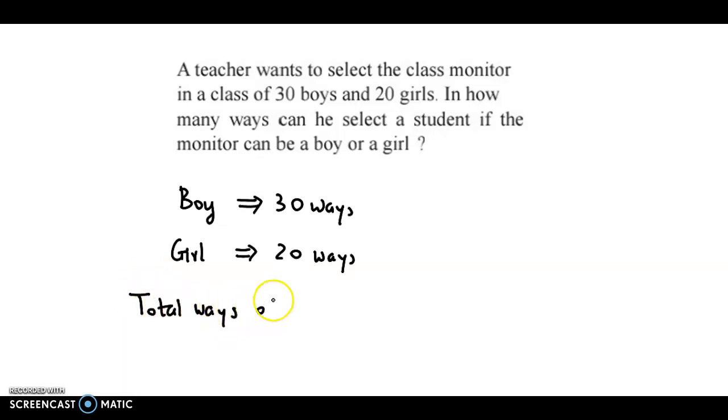The total ways of selecting a monitor would be 30 plus 20. Here we have used the fundamental principle of addition because we have a choice, so the total choices are 50.